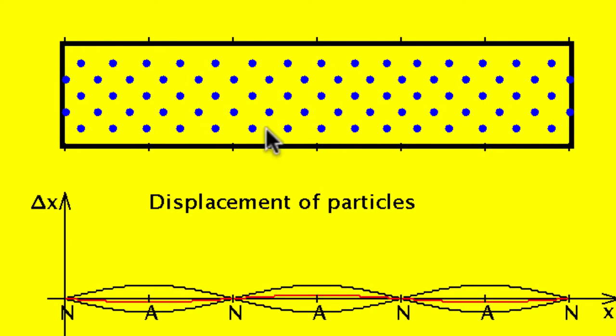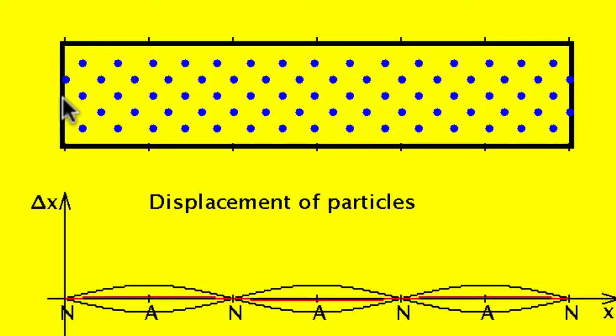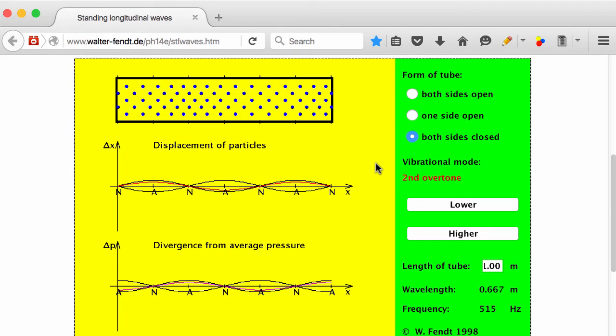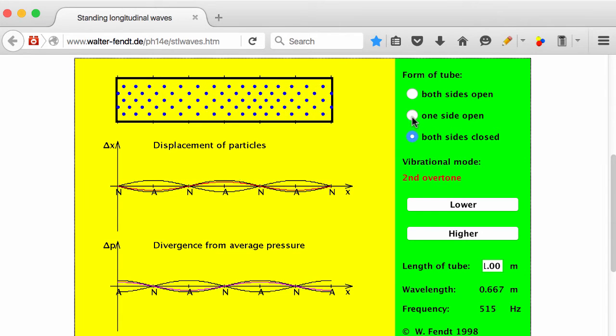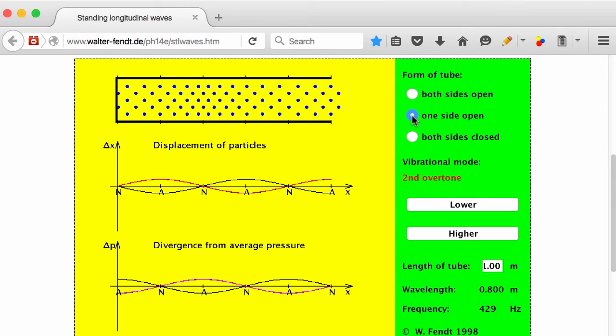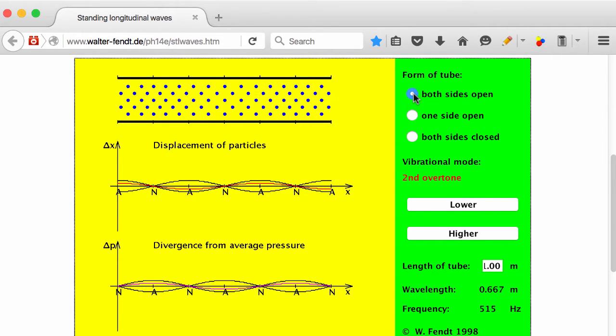You can also find spots where the molecules are moving back and forth maximally in simple harmonic motion. Those are displacement anti-nodes. Here at the end of the tube is a displacement node. Here the other end of the tube is a displacement node. These longitudinal standing waves can also occur with one side of the tube open, and at that open end you'll always have an anti-node. At a closed end you'll always have a node. You can even have both sides open, in which case at both open ends there are displacement anti-nodes.